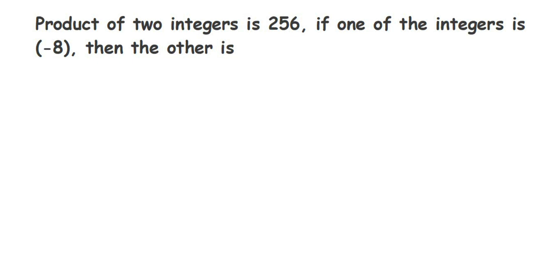Hello everyone, here is a question from integers. The question is: product of two integers is 256. If one of the integers is -8, then the other is?